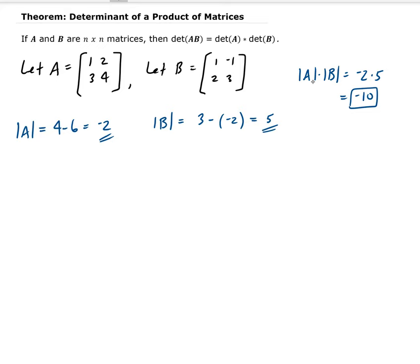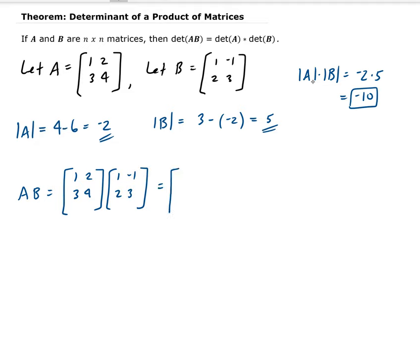Now let's compare this by taking the determinant of A times B directly. We have to calculate the product A times B. Remember, to multiply these matrices you take the first row dotted with the first column: 1 times 1 plus 2 times 2 gives us 5. Then the first row dotted with the second column: negative 1 plus 6 gives us 5 for that entry.